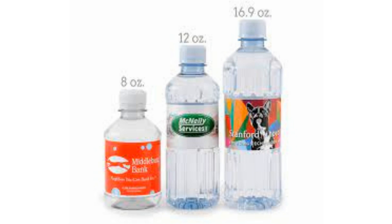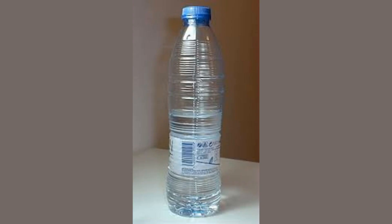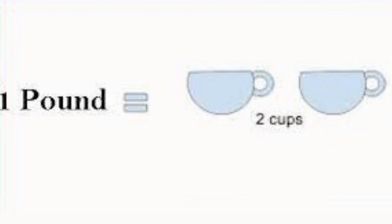If you aren't sure how big your coffee mug is, use a 12-ounce (355 ml) bottle of water to figure it out. Fill the bottle if it's empty, then pour the water into the mug until it's full. If the bottle is empty, the mug holds 12 ounces (355 ml); if the bottle is one-third of the way full, the mug holds eight ounces (237 ml).